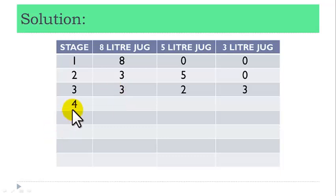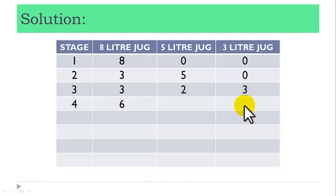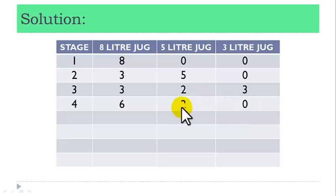Stage 4: turn the fluid from the 3-liter jug into the 8-liter jug to obtain 6-liter fluid. Then the 3-liter jug remains empty, while we still have 2-liter fluid in the 5-liter jug.